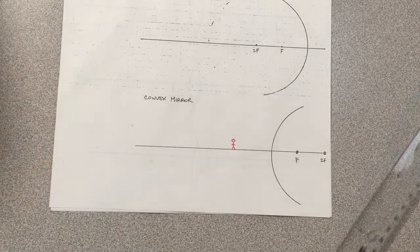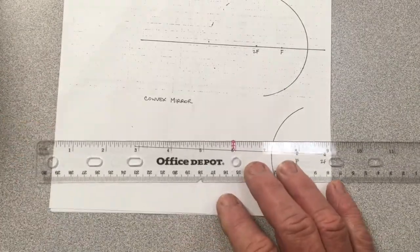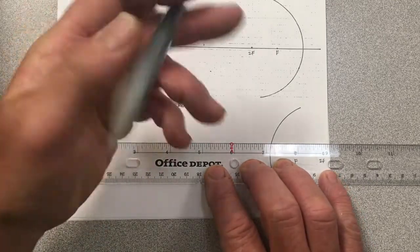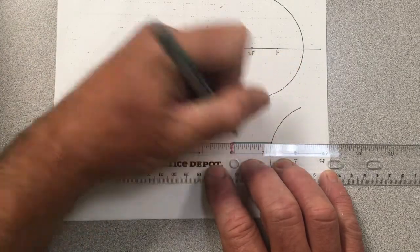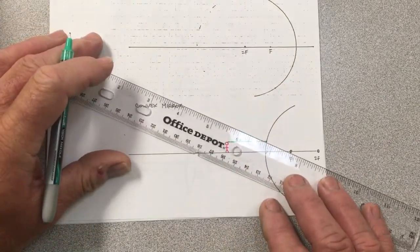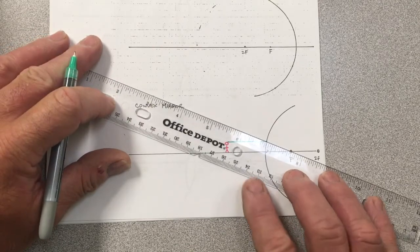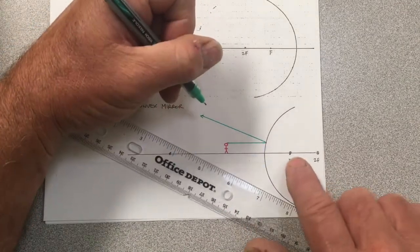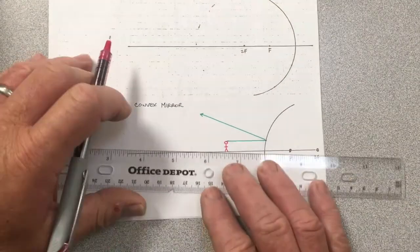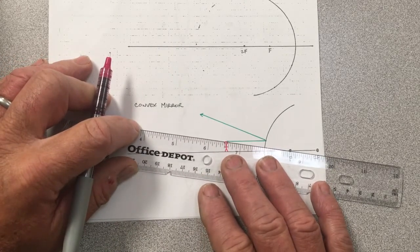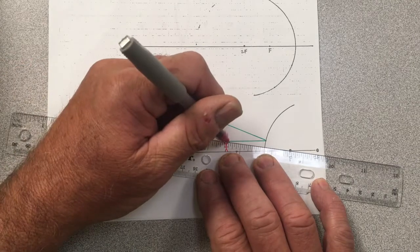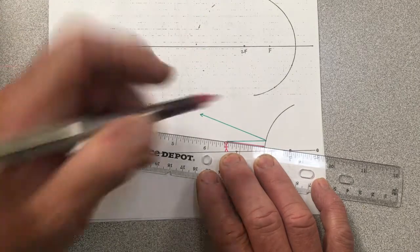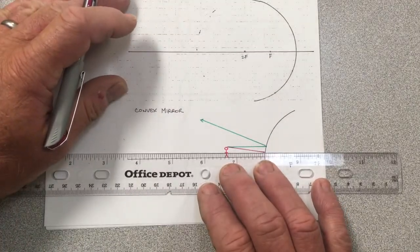So I'm just going to do one drawing. Ray one, again, you probably are not surprised, is made to go parallel to the principal axis. And then when it reflects, it reflects away from F. So that ray goes away from the mirror as if it had originated at the focal point. The second ray, again, typically you go toward F. But you can't get toward F because it's behind the shiny side of the mirror. But that ray that heads toward F will reflect parallel to the principal axis.